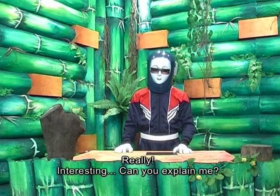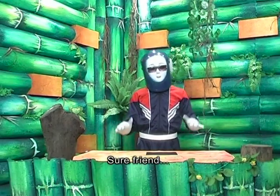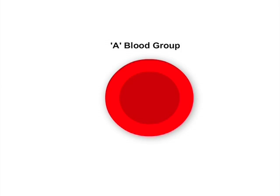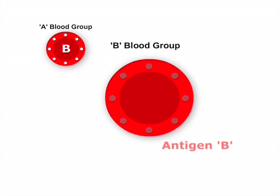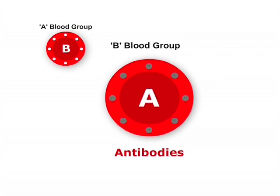Can you explain me? Sure friend. A blood group contains antigen A on blood cell surface and anti-B antibodies in plasma. B group contains antigen B and anti-A antibodies in plasma.